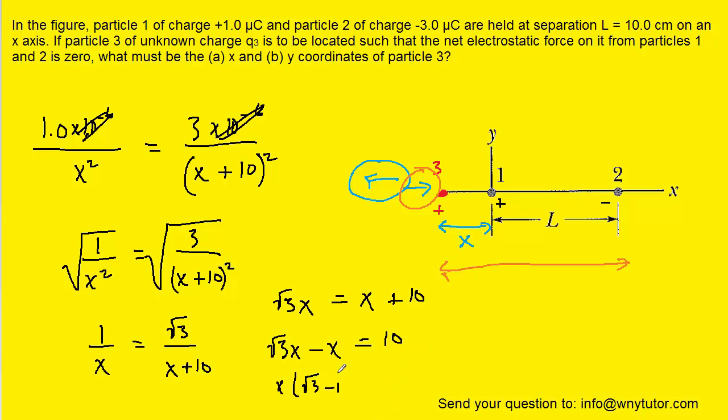We could actually factor out an x so that we have root 3 minus 1. And then if we divide both sides of the equation by root 3 minus 1, we're going to see that x is equal to 10 divided by root 3 minus 1, which gives us approximately 14.